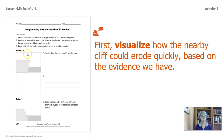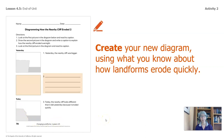In this diagram from yesterday, the nearby cliff was bigger, and then today you can see that it's been worn away — it doesn't have that same angle; it's kind of crumbly right here. Now I'd like you to create your new diagram in the center, using what you know about how landforms erode quickly. If a family member is available, maybe the two of you can get together and do this together. Go ahead and pause the video so that you can work on it.